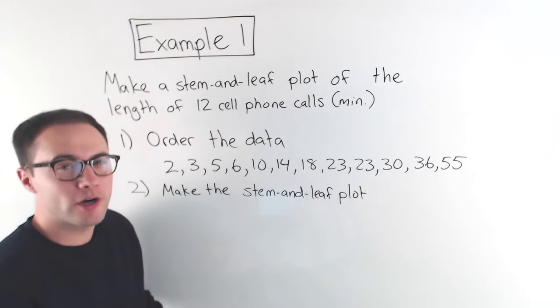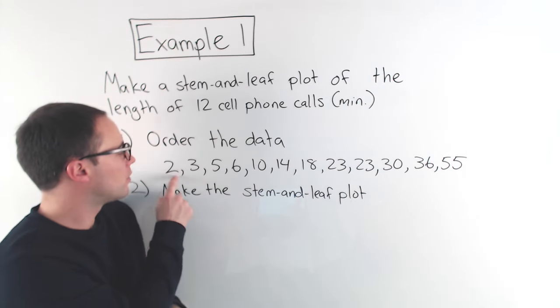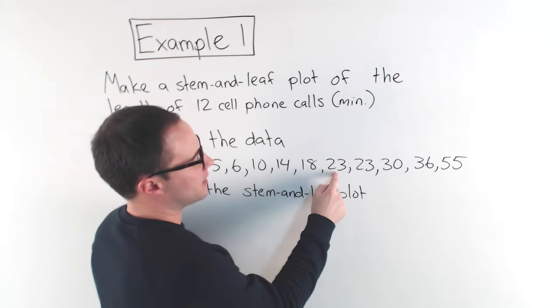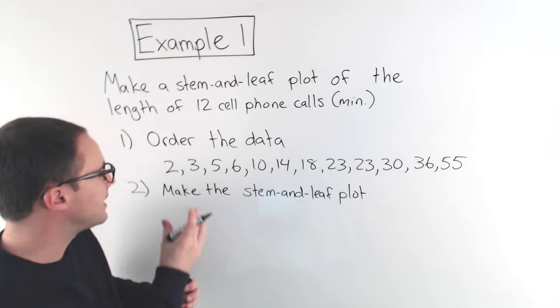Okay, I've got my data in order. I'm just going to double-check real quick to make sure I didn't forget any values: 1, 2, 3, 4, 5, 6, 7, 8, 9, 10, 11, 12. There were 12 cell phone calls, so I'm good.